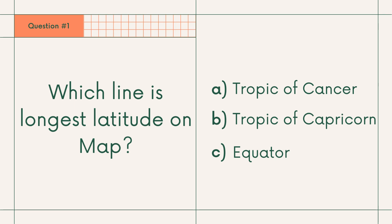Question number 1: Which line is the longest latitude on the map? A. Tropic of Cancer, B. Tropic of Capricorn, or C. Equator. Answer: C. Equator.